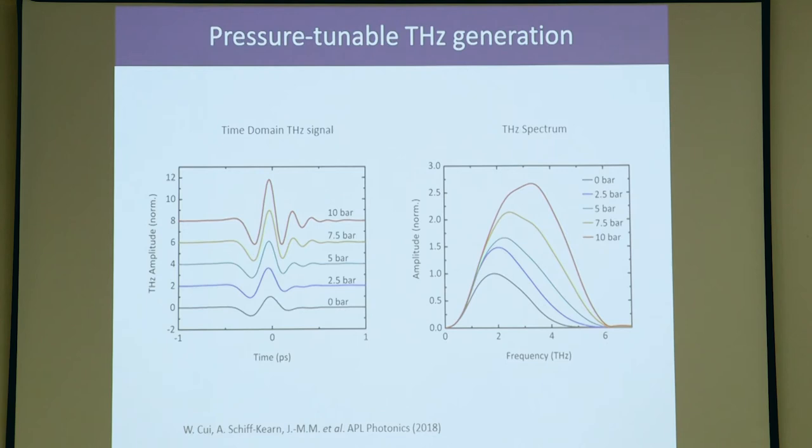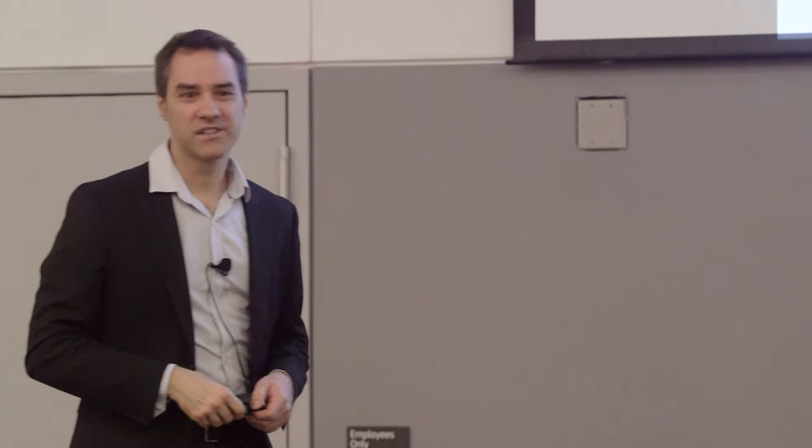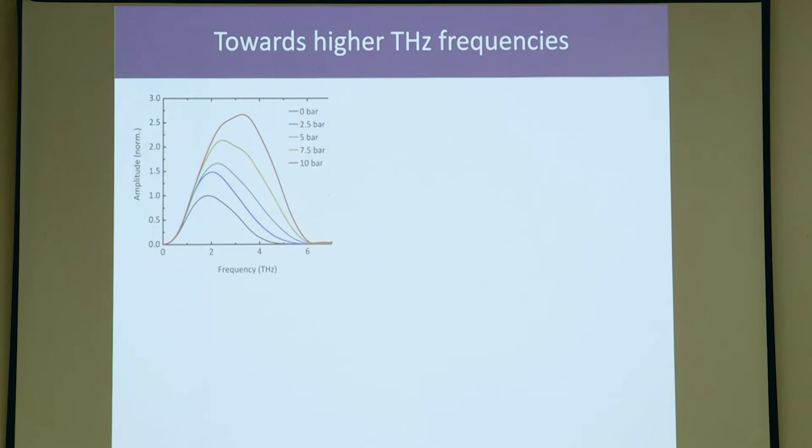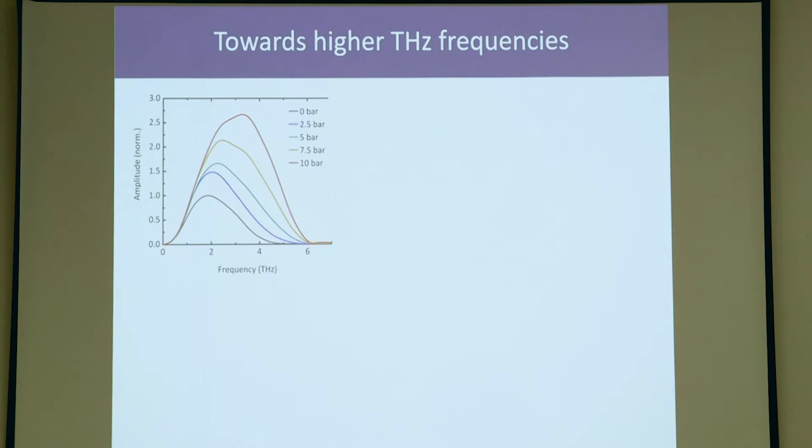I have to mention these are experimental results. My students Wei Cui and Aidan Schiffkern made the mistake of taking two good measurements, so I always have to mention this or people think it's a simulation. You may ask me, why did you stop at 10 bar? The gas cell would explode before that, but there's another reason. In our setup, we're using gallium phosphide and gallium phosphide has a phonon resonance around 10 terahertz. So it will start absorbing everything around this area. Also, the phase matching conditions in gallium phosphide are not so good when you go to higher terahertz frequencies.